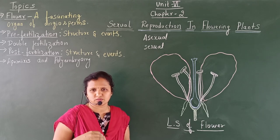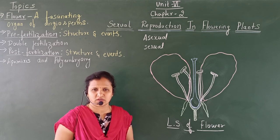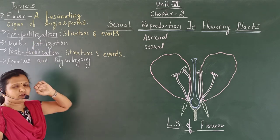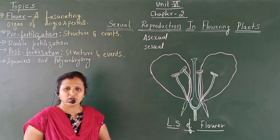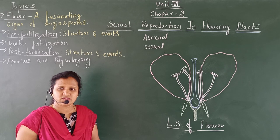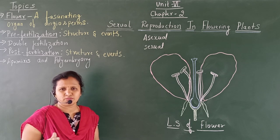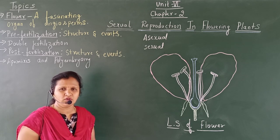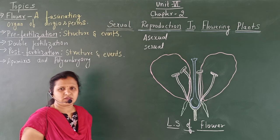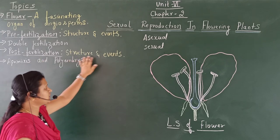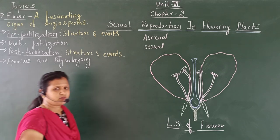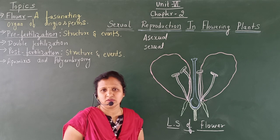All the events and structures involved before fertilization will be studied in pre-fertilization. After fertilization, in the flower, the ovary develops into fruit, and inside the fruit the ovule develops into seeds. The ultimate products of sexual reproduction — fruit and seed — will be discussed in post-fertilization structures and events. The last topic is apomixis and polyembryony, which we will discuss in detail when we take up that topic.